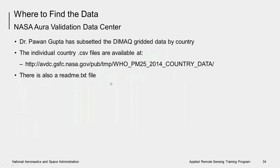The CSV file containing the full gridded dataset is very large — approximately 1.4 million rows. Therefore, Dr. Pawan Gupta has kindly subsetted these gridded estimates by country. These separated country files, along with a README file, can be obtained at the NASA AVDC site, accessible by the link shown here.